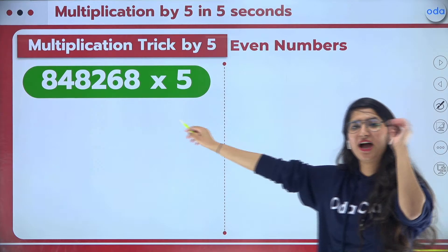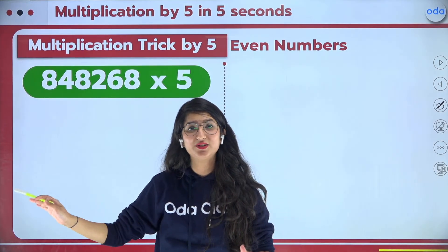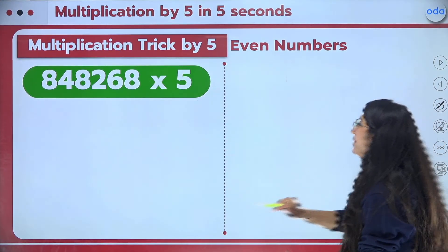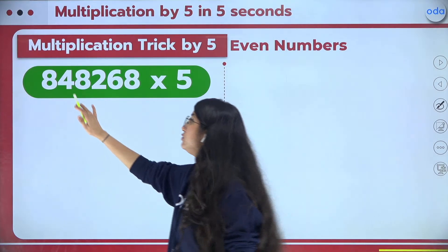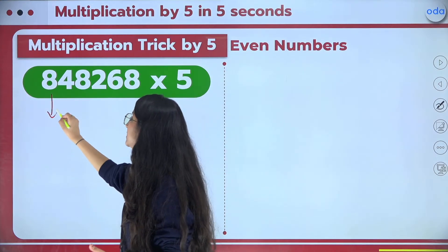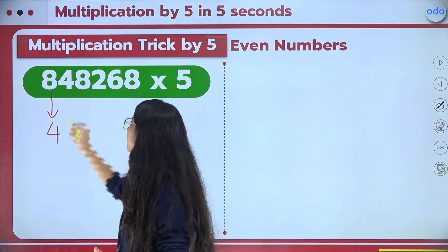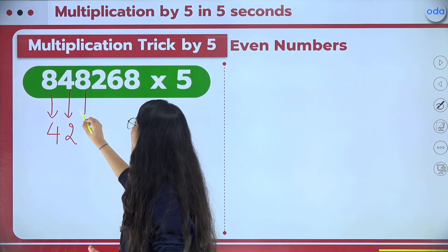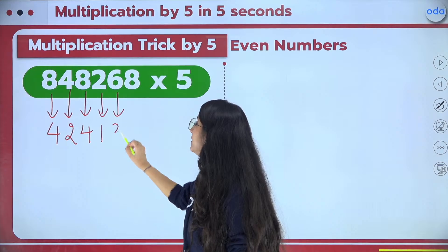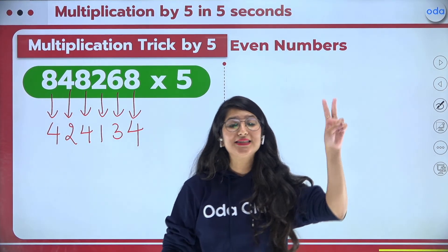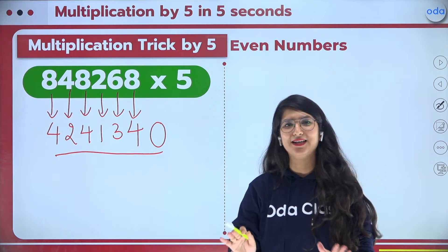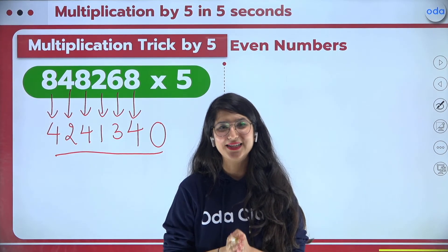Let's do some practice. We have a new question and will solve it in just 5 seconds. Check where each digit comes in the 2 times table: 8 is at the 4th place, 4 at the 2nd, 8 at the 4th, 2 at the 1st, 6 at the 3rd, and 8 at the 4th. Step 2: just write 0 at the end, and your answer is done.